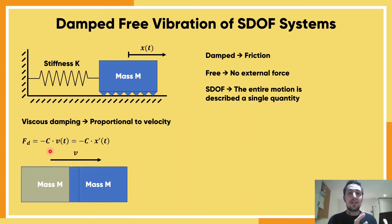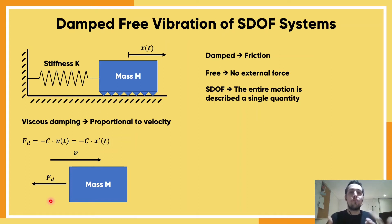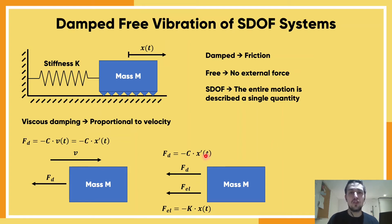Imagine the mass is moving to the right — that means the velocity is to the right, so the damping force has to go to the left. This is the same way friction works in a car, or air resistance: if you're moving forward, the force of friction is braking your car. So the damping force has a minus sign with respect to velocity, and we can write velocity as the first derivative of position. The damping force is therefore minus c times x-dot.